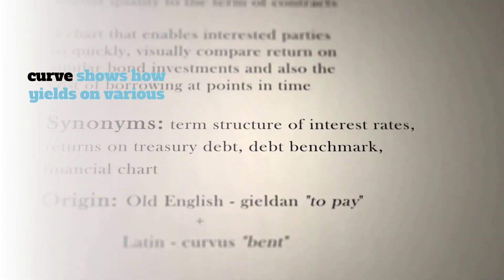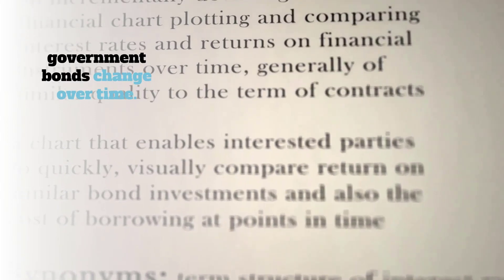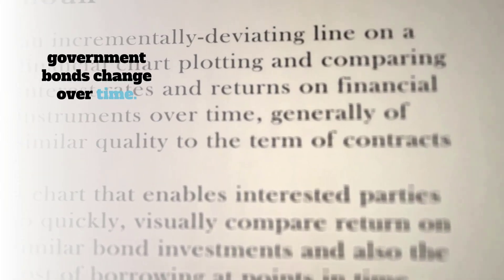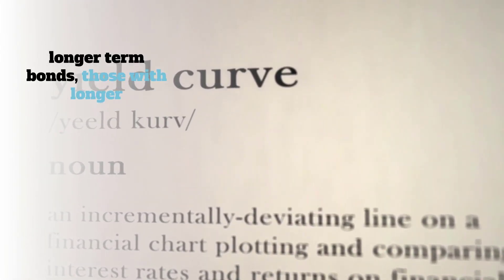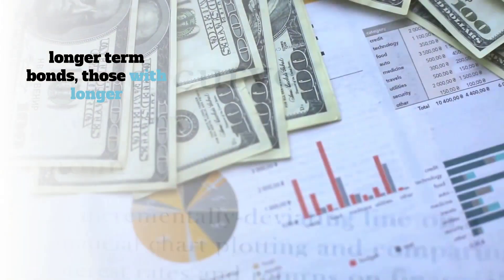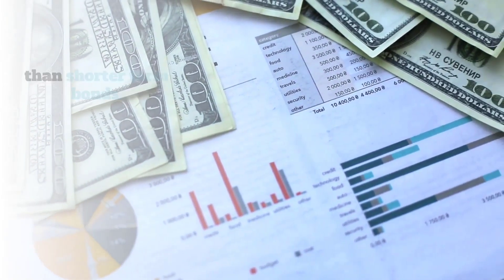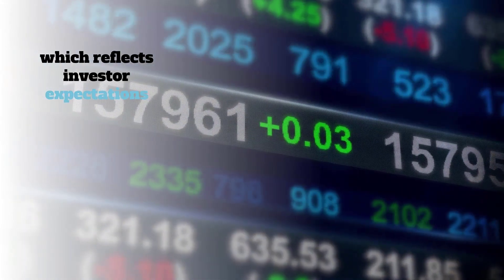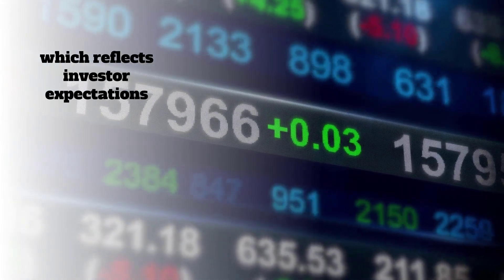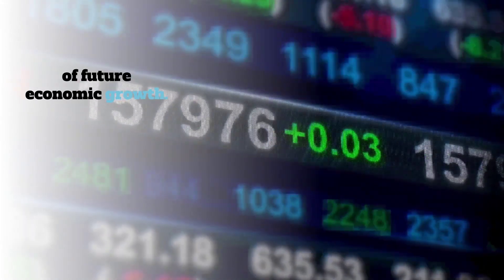A yield curve shows how yields on various government bonds change over time. A normal yield curve shows that longer-term bonds — those with longer maturities — offer higher yields than shorter-term bonds, which reflects investor expectations of future economic growth.